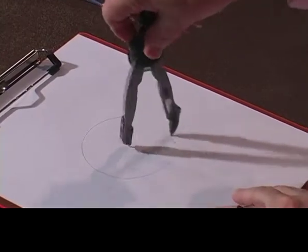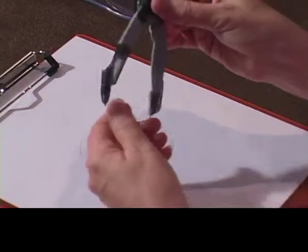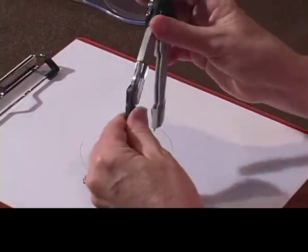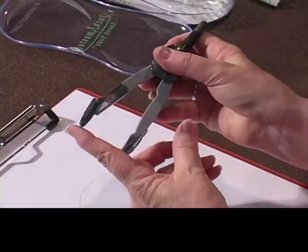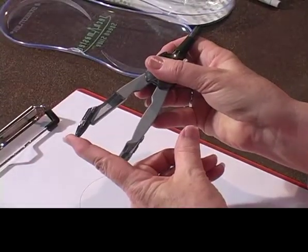And we can draw circles. That's the main purpose of a compass, to draw circles or arcs. And you have a radius, whatever this length is, that would be the radius of your circle.